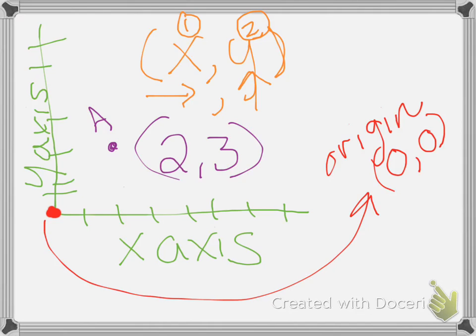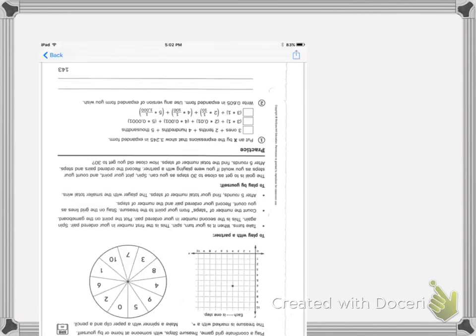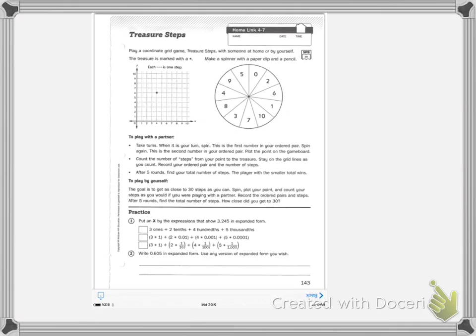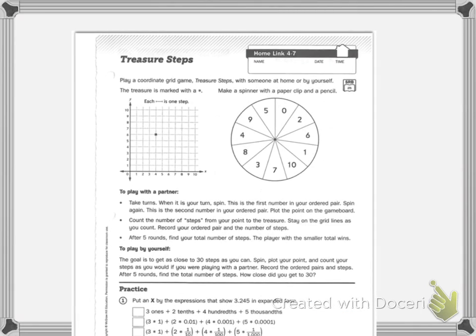4, 7's homework looks like this. Let me turn it around. So it says play a coordinate grid game treasure steps with someone at home or by yourself. The treasure is marked with a star. So our treasure is right here. And then you make a spinner with a paper clip and a pencil. If you have a partner, it says take turns. When it's your turn to spin, this is the first number in your ordered pair. Spin again. This is the second number in your ordered pair.